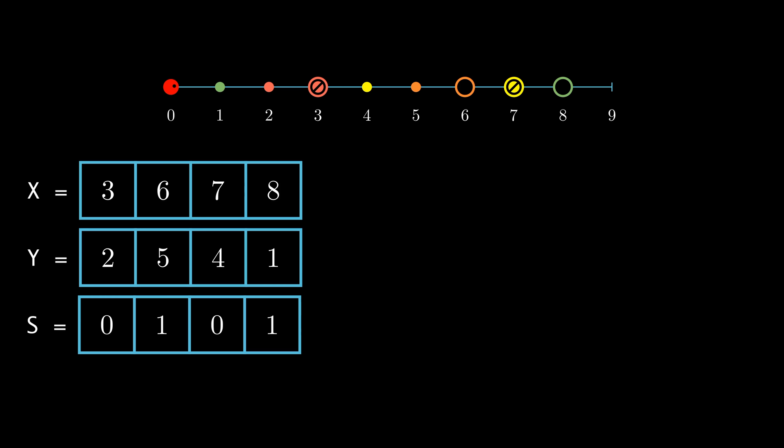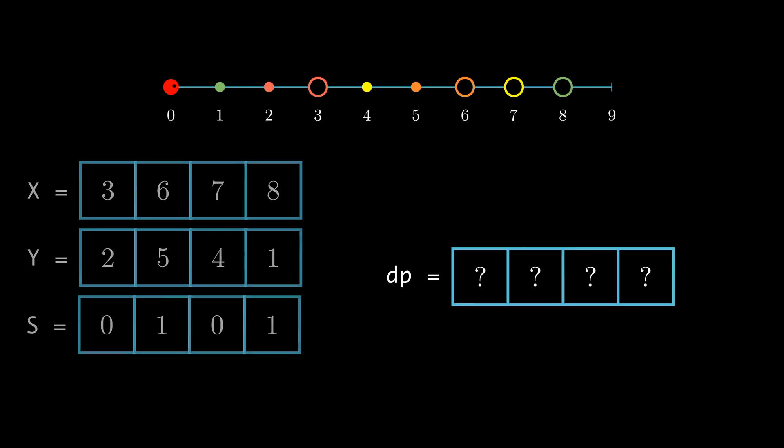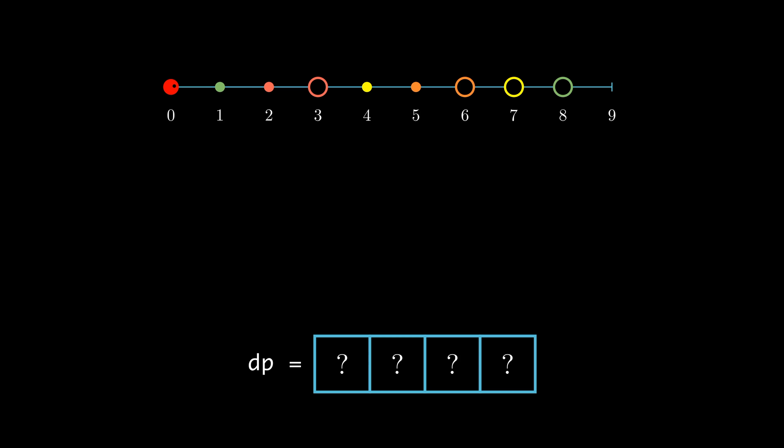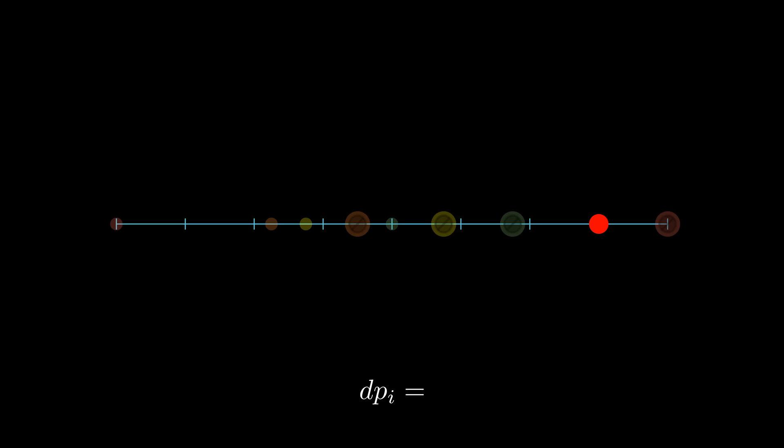Now, consider tracking the time it takes to return back to a portal entrance after entering it. We've established that these return trips will always cost the same amount of time, since they always take the same path. Let's add another array dp, where dp of i represents the return trip time for portal i. Take a moment to convince yourself that if we have successfully computed dp, we can easily obtain the answer by adding up the dp values for all portals whose initial state is open.